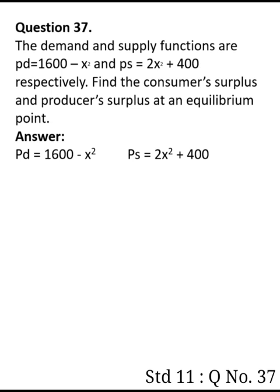So pd equals 1600 minus x square and ps equals 2x square plus 400. At equilibrium position, pd equals ps.